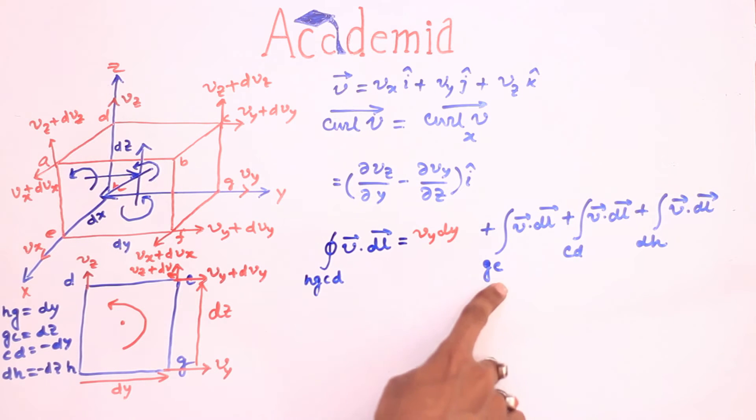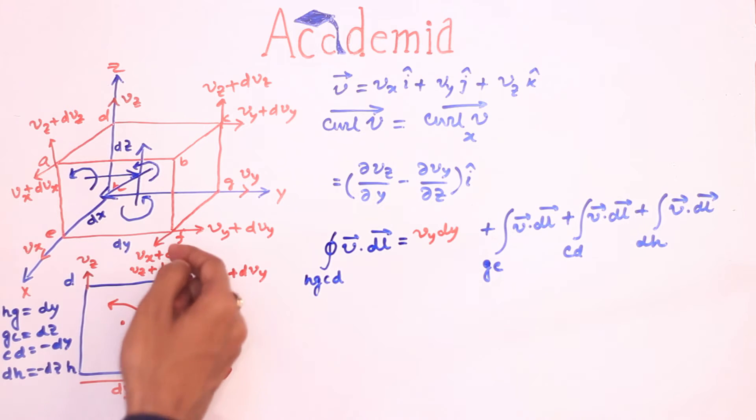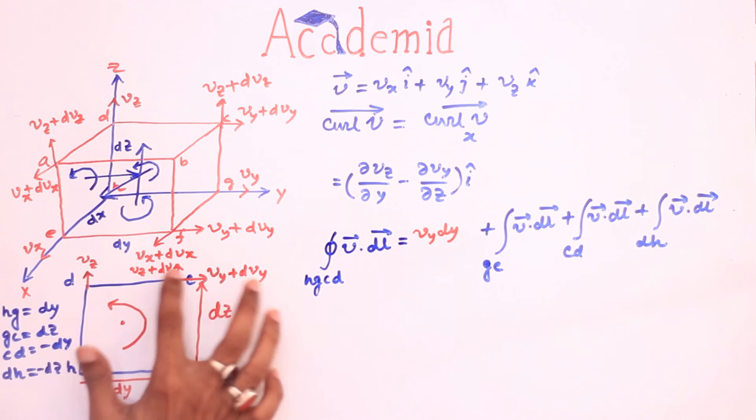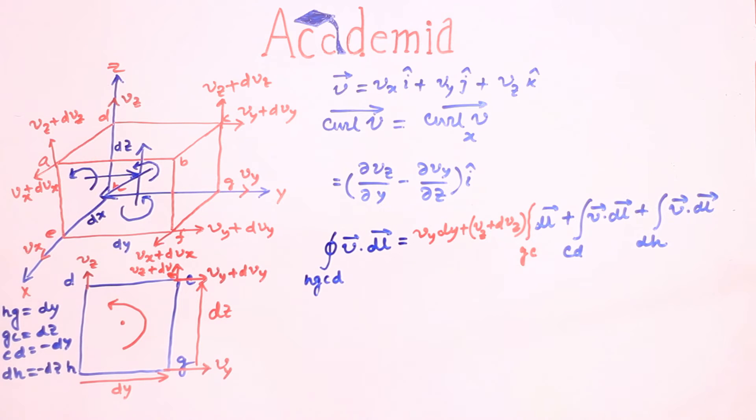Similarly along gc, V is vz plus dz which is constant and comes out of the integration. And integration dl over gc is gc which is dz.